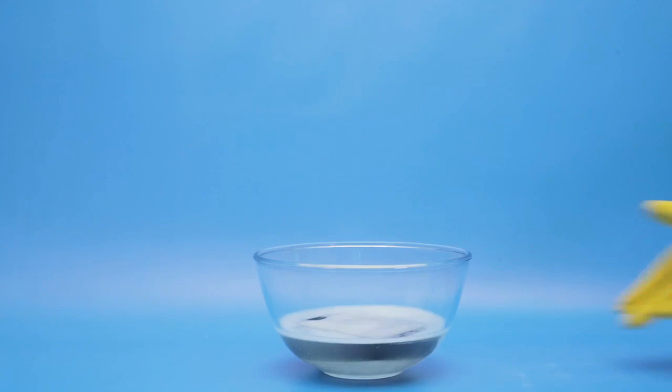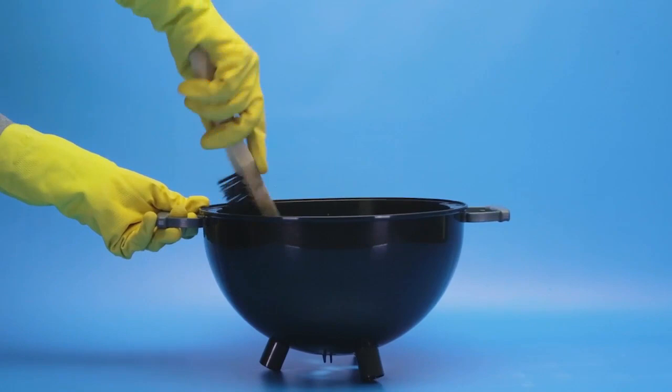You can simply dust down the inside of the BBQ with a steel brush. Find more useful cleaning tips at cleanipedia.co.uk.